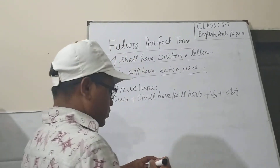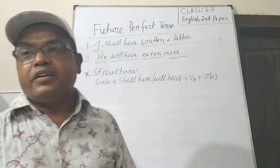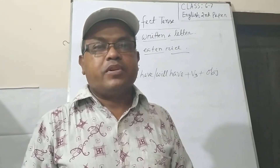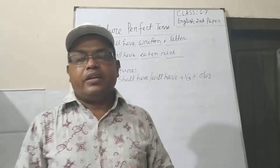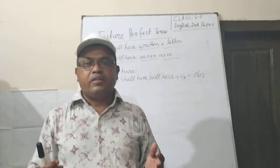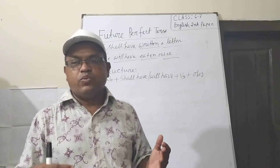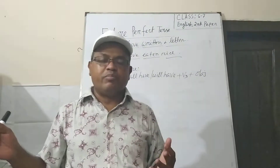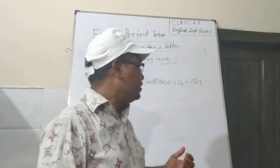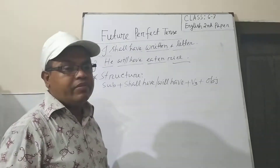You know where 'shall' and 'will' are used. After first person — I and we — 'shall' is used. And in all other cases — you, she, he, they, or any other subject — 'will' is used. So: 'shall have' after I and we, and 'will have' for other persons.